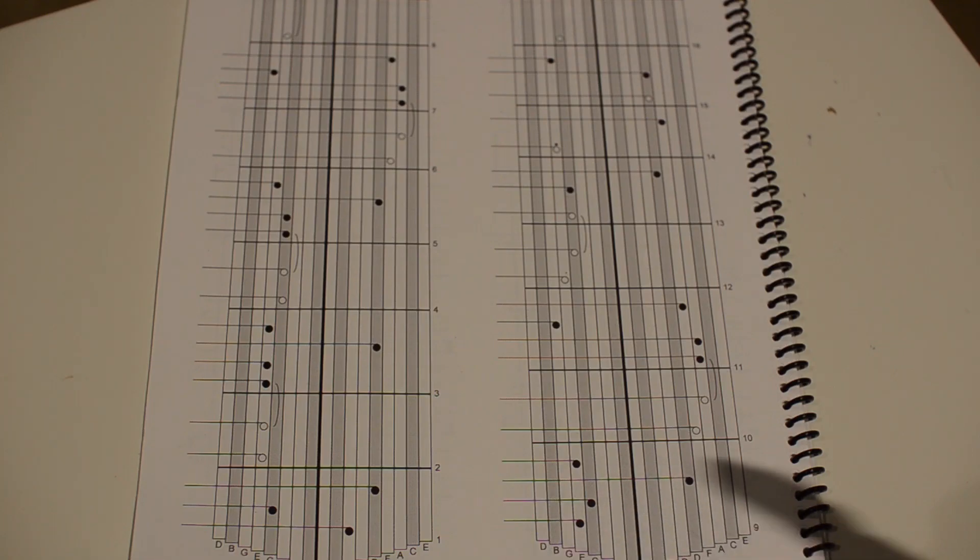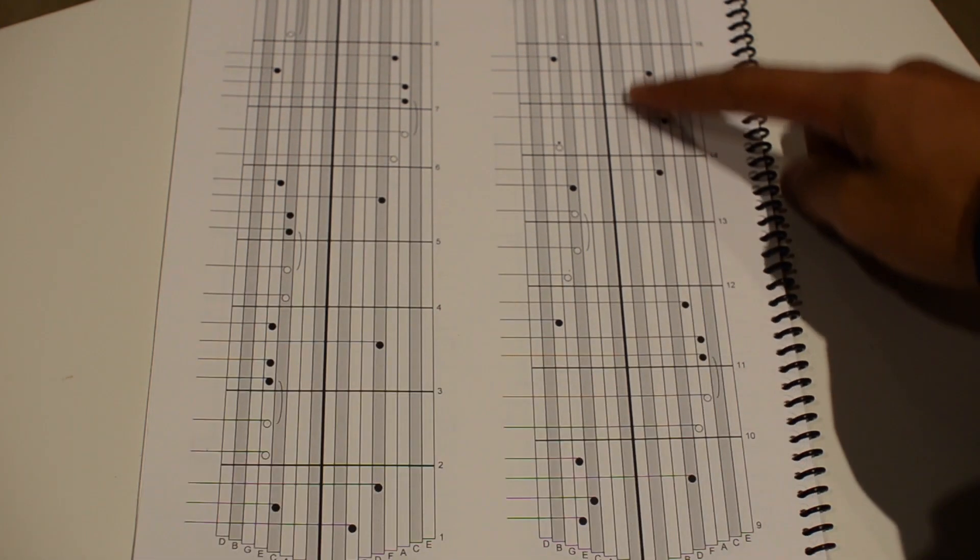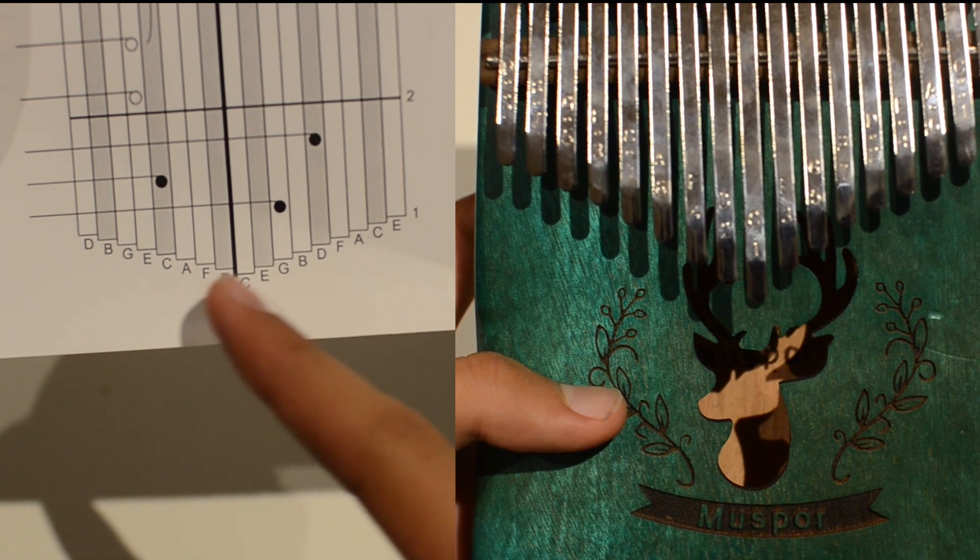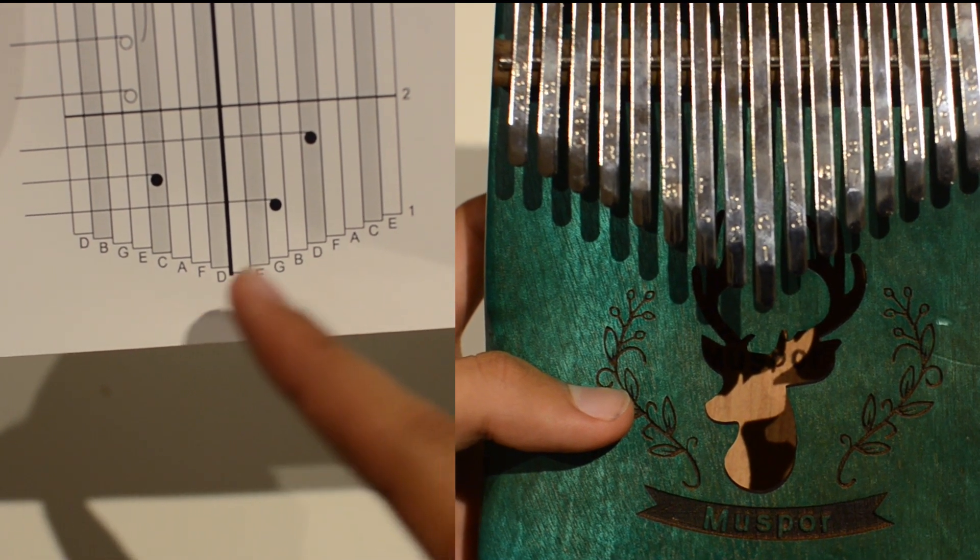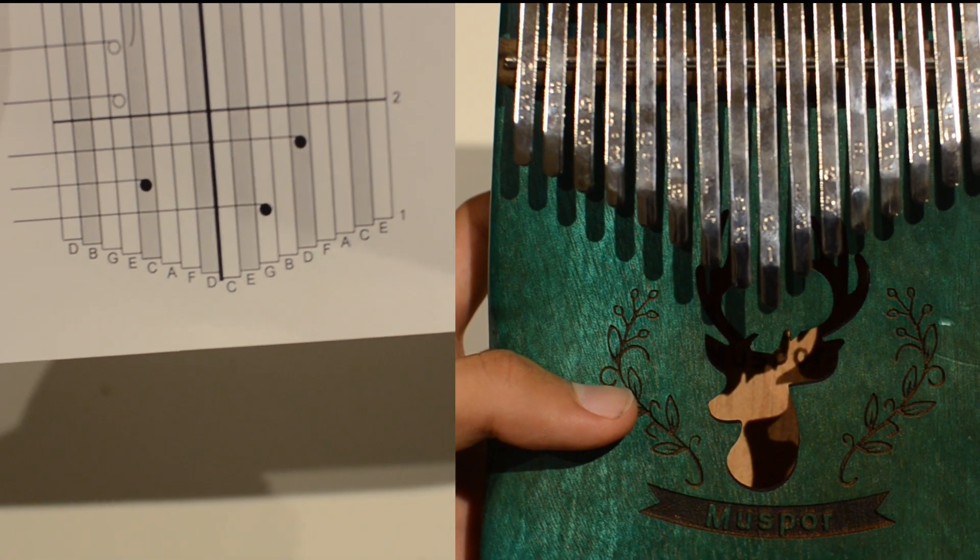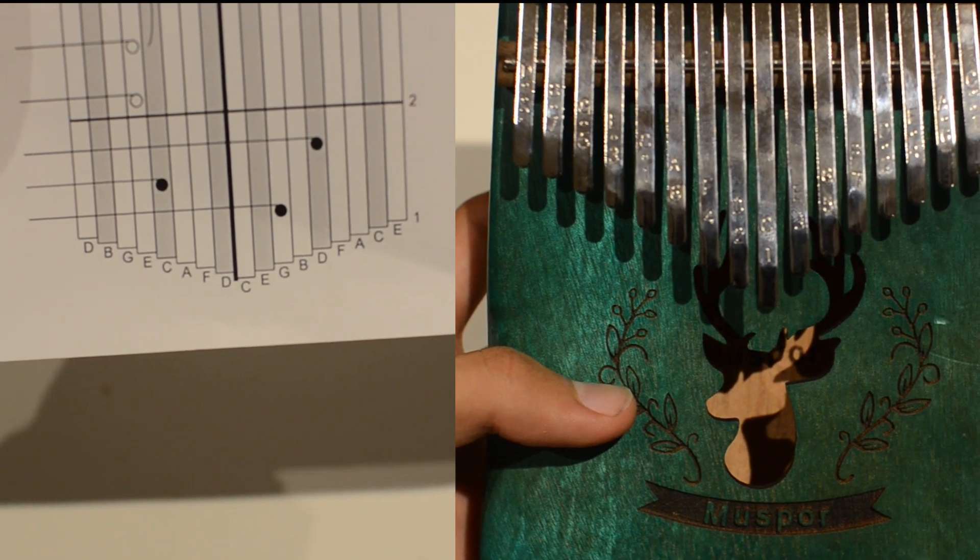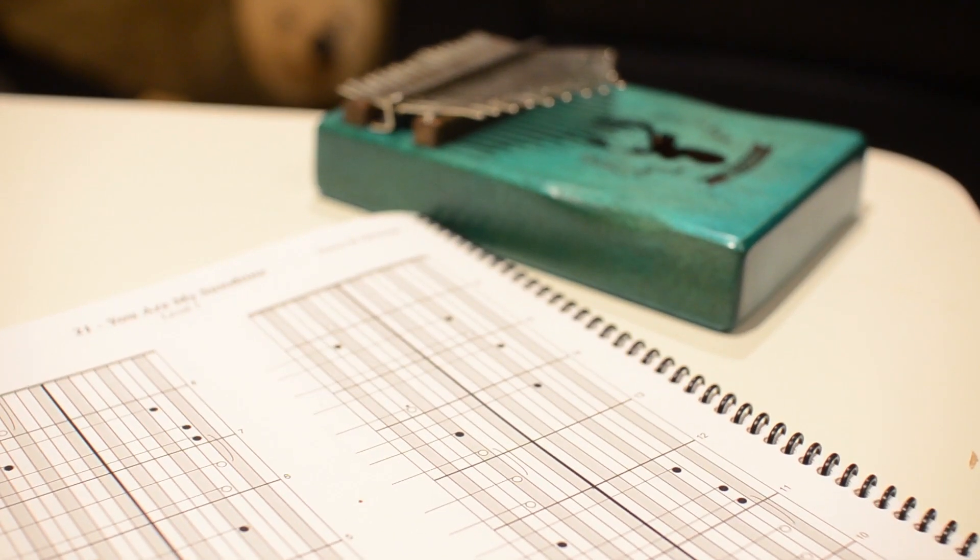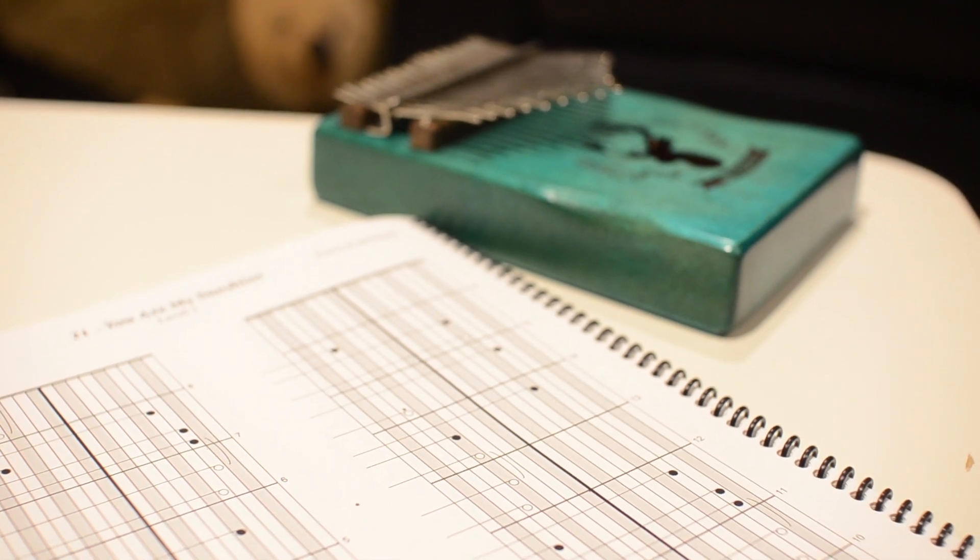As you can see, Calimba tablature is generally read from bottom to top. The notation of notes on most tabs will resemble the keys on a Calimba. As you can see, the notes alternate just like they do on a Calimba. This system is used to make it easy to replicate the notes from tabs onto a Calimba, and vice versa.